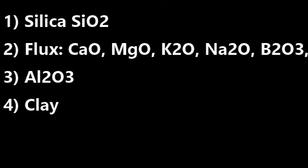Now you may be asking yourself: what are the essential factors for making up a ceramic glaze? There are four different factors to look at. The first one is a glass-like substance, usually in the form of silica. The second is a fluxing agent in order to lower the melting temperature of the silica — these can be in the forms of magnesium oxide, calcium oxide, boron, potassium, sodium, and so on. The third is alumina, or AL2O3, which acts as a big contributor to stabilizing your glaze. And the fourth is clay, in order to help suspend the glaze slurry.